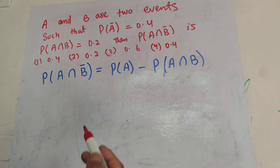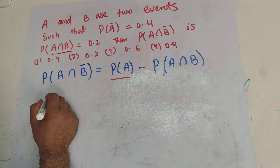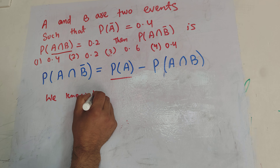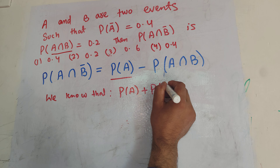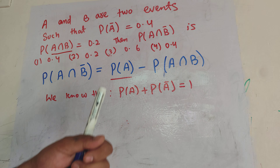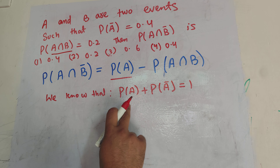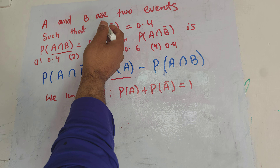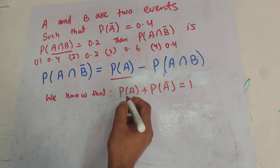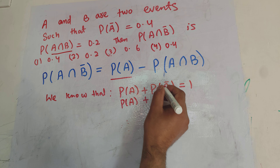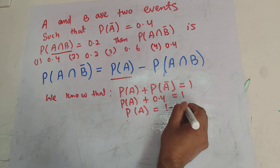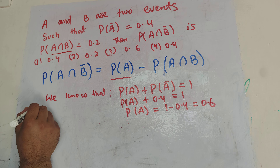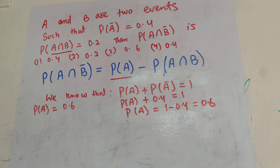Now, A intersection B is being given to us, but the probability of happening of event A is not being given. We know from probability that the probability of happening of an event plus the probability of not happening of an event should be equal to 1 — either the event happens or it does not happen. We are told that the probability of not happening the event is 0.4, so probability of A should be equal to 1 minus 0.4, which comes out to be 0.6.